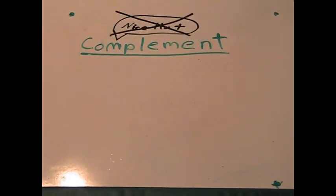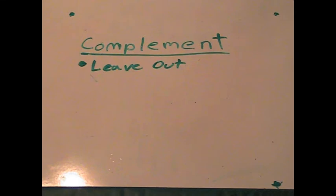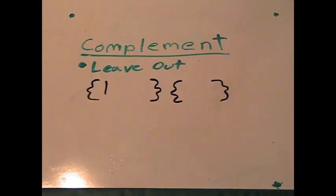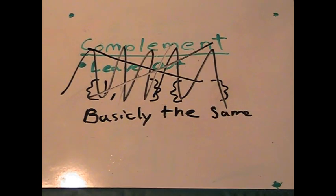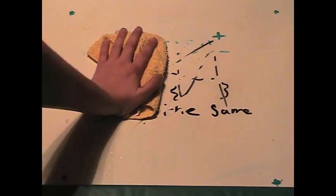Complement is used to leave out elements. For example, 1 and, you know, never mind. Basically the same thing as relative complement. Forget about that one.